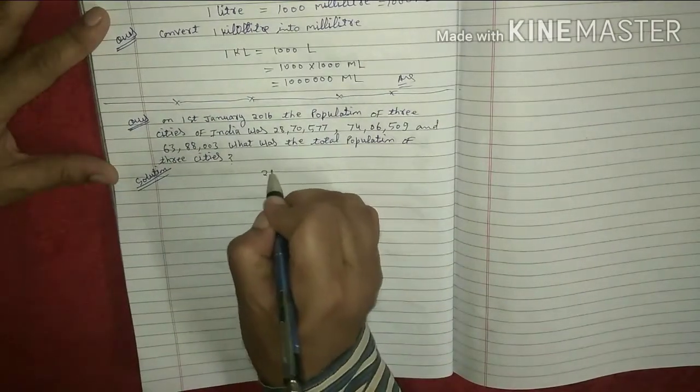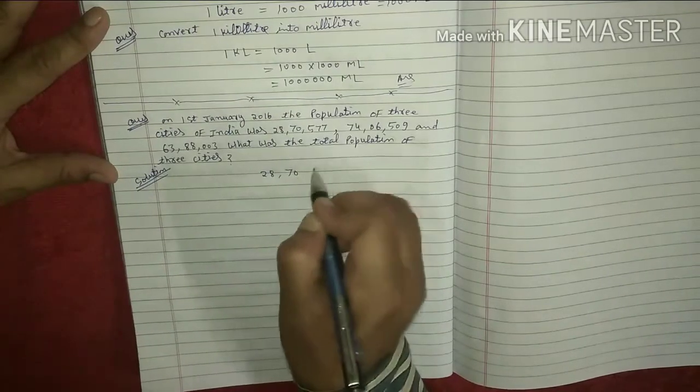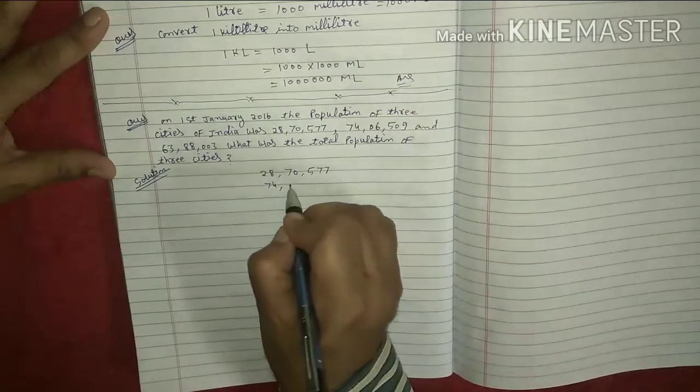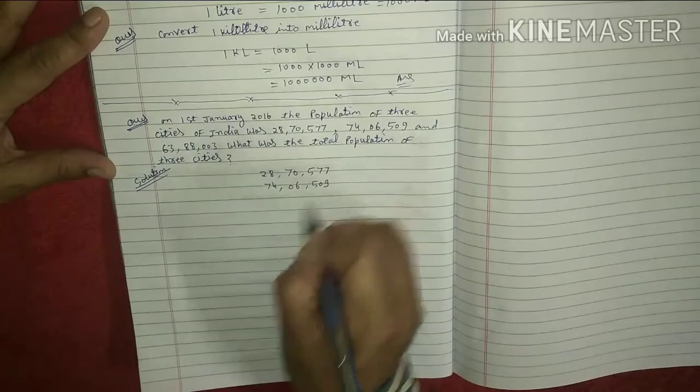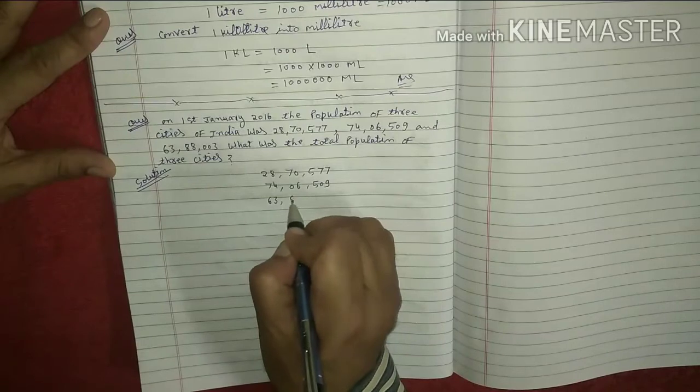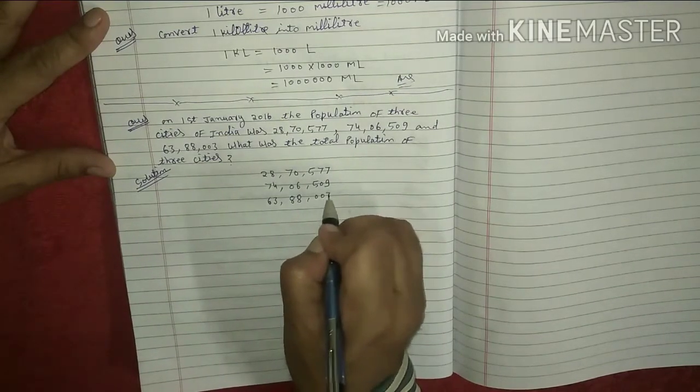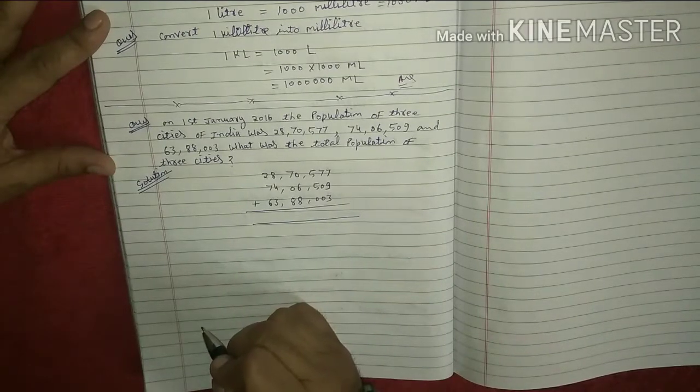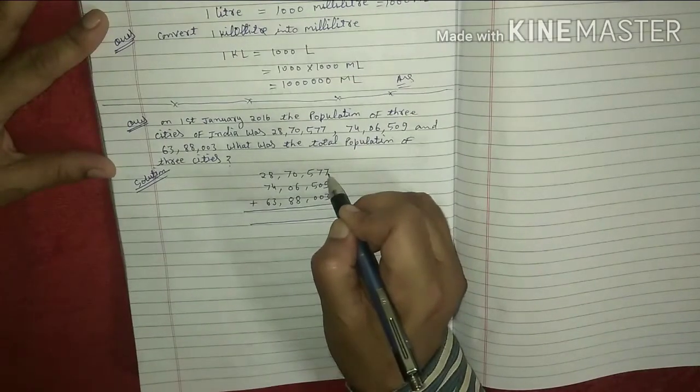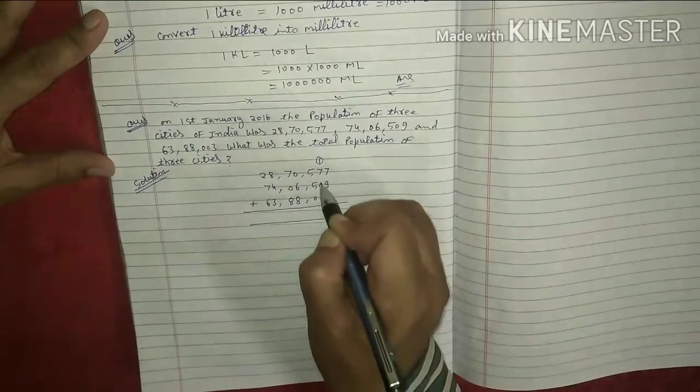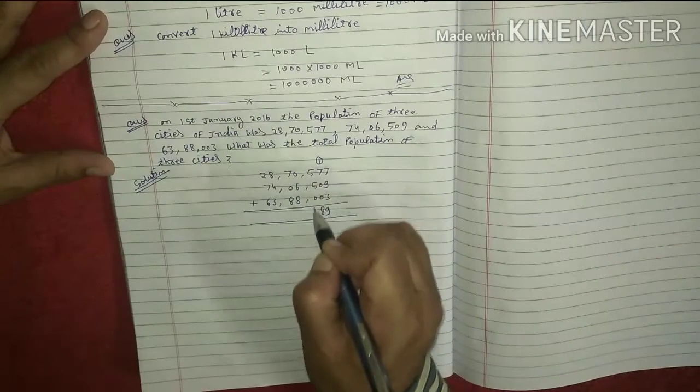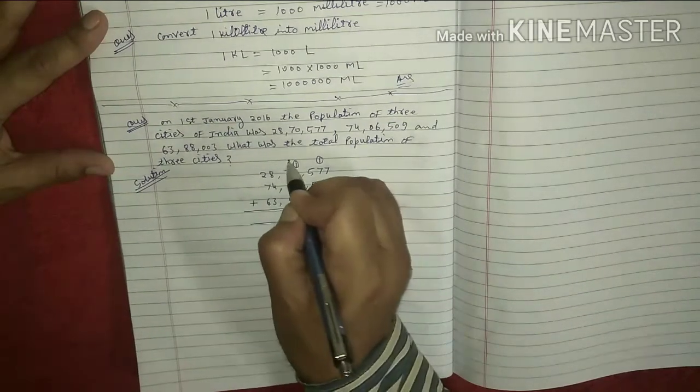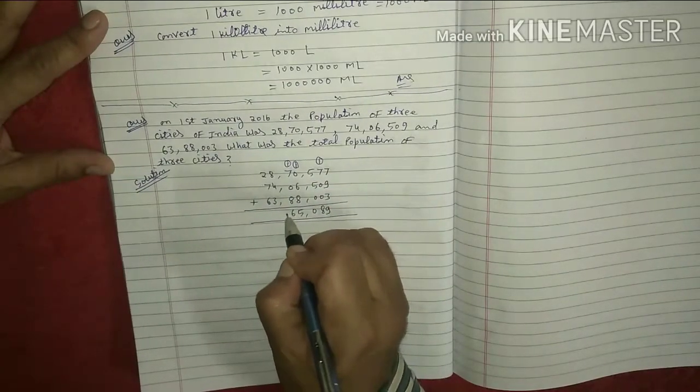Let's solve it. You have to add all three city's population, right? 9 and 3, 12 and 7, 19 carry 1, 7 and 1, 8, 5, 5, 10 carry 1, 1 and 6, 7, 7, 8, 15. Carry 1, 1, 7, 8, 8, 16 carry 1...